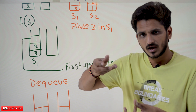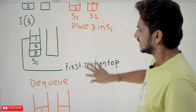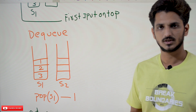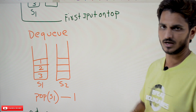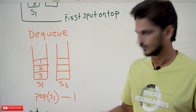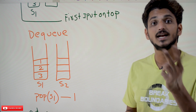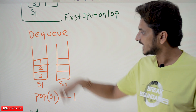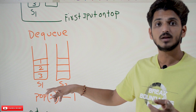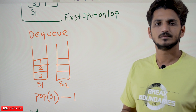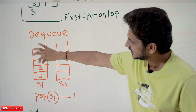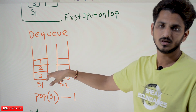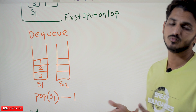Then the top element will always be the first inserted element. Now if you want to do a DQ operation, it's very simple — just pop the element from S1. That gives you the first inserted element. So 1 will be taken out. If you DQ again, 2 is on top — the second inserted element. Remove it. If the stack is empty, it means the queue is empty and you return minus 1. So DQ gives 1, then 2, then 3, and if you DQ again with no elements, display minus 1.